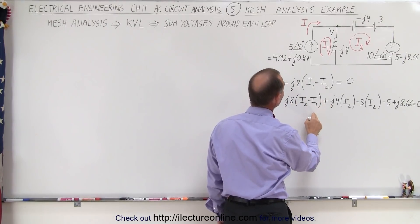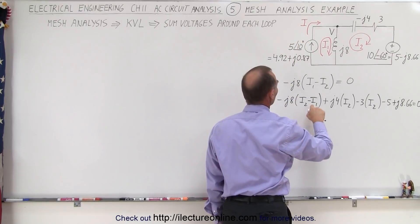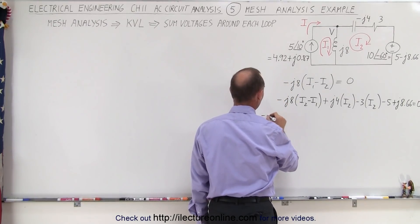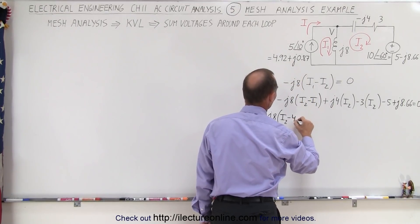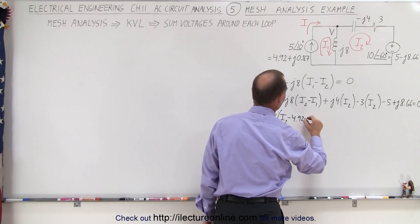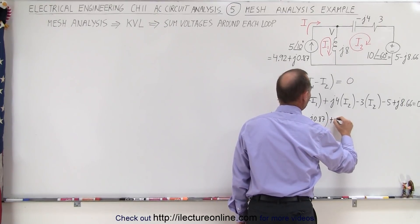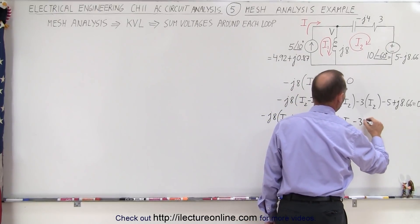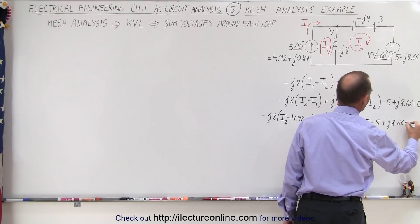We could do that or we could also realize that I1 is a given, I1 is equal to the current of the current source so we could replace I1 by this or we could put it in this format. So that means that minus J8 times I2 minus I1 which is minus this, so minus 4.92 minus J0.87 that would be plus J4I2 we have minus 3I2 minus 5 plus J8.66 equals zero.